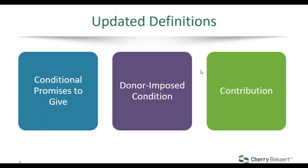Looking at the old definition of a donor-imposed condition: it focused on a stipulation specifying a future uncertain event whose occurrence or failure to occur gives the promisor a right of return or releases the promisor from its obligation — still focused on probability analysis. Under the new standard, we move away from that. Now it is a donor stipulation — and that donor could include a contributor or a maker of grants. A grantor could also have stipulations that represent a barrier that must be overcome before the recipient is entitled. We switch from talking about uncertain future events to a barrier, and we introduce new ideas about what a barrier means, including three indicators included in the standard.